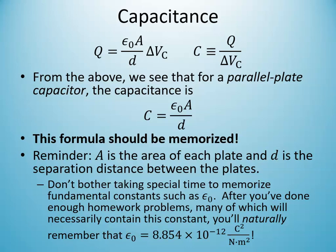In general, you won't necessarily have a vacuum between your capacitor plates. If you have some material between the plates with a dielectric constant different from that of the vacuum, then ε₀ will be replaced by ε and won't equal 8.854 × 10⁻¹² C²/(N·m²). That's something we'll get to later in this unit.